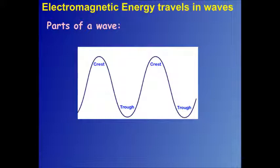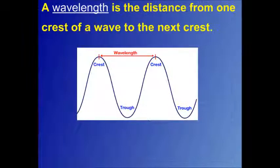Electromagnetic energy travels in waves. This diagram shows the parts of the wave. The top of the wave is called the crest and the bottom of the wave is called the trough. A wavelength is the distance from one crest of a wave to the next crest. It's also the same as the distance between one trough to the next trough.